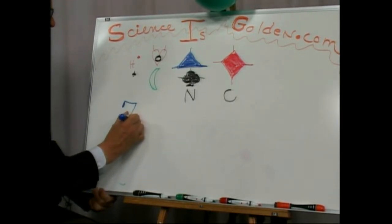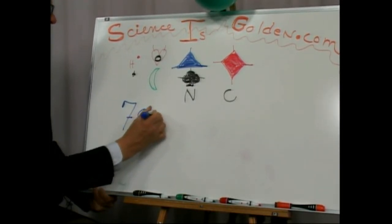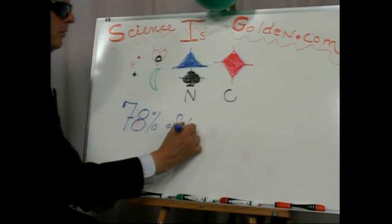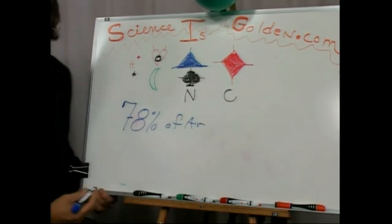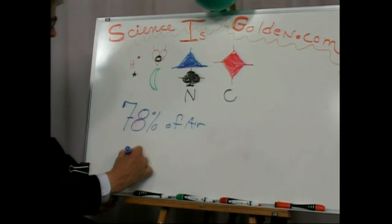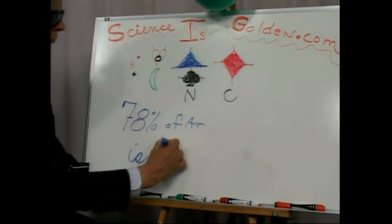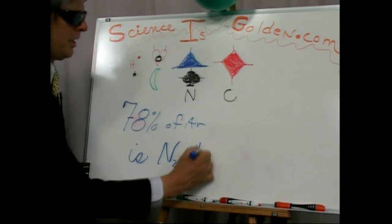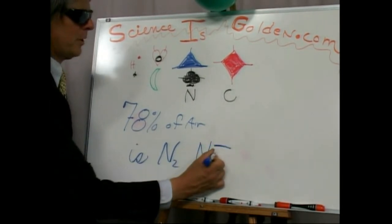The component of the air that you breathe right now is nitrogen. And it's two of them, so N2 is an N triple bond.